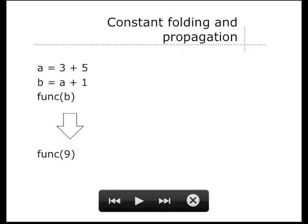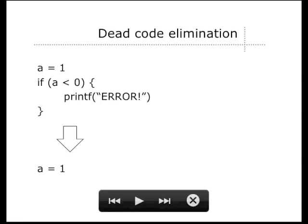Sometimes the compiler completely removes part of your code because it's not necessary. For example, the compiler can detect that the value of b is always going to be 9 because it's based on the same operations — nothing changes at runtime — so it just replaces all the calculations with a call to func with the argument 9. Sometimes entire chunks of code are missing because the compiler proved they can never be executed. For example, if we check whether a is less than 0 but we just assigned 1 to a, the compiler sees that and removes that branch entirely.